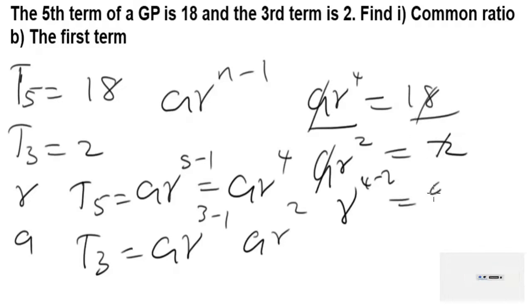When 18 divided by 2 you're going to have 9. So we have r^2 equals 9. To make r the subject, you square root both sides. So we're going to have r equals square root of 9, which gives us 3. So the common ratio is 3.